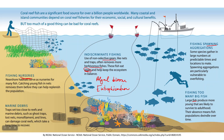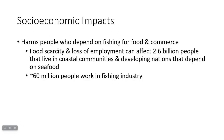There are also significant socioeconomic impacts. Throughout the world, many people depend on fishing for both food and income. Food scarcity and loss of employment could affect almost 2.6 billion people living in coastal communities and developing nations that depend on seafood. An estimated 60 million people work in the fishing industry, so if fish stocks collapse and there are no more fish to catch, those people lose their jobs.